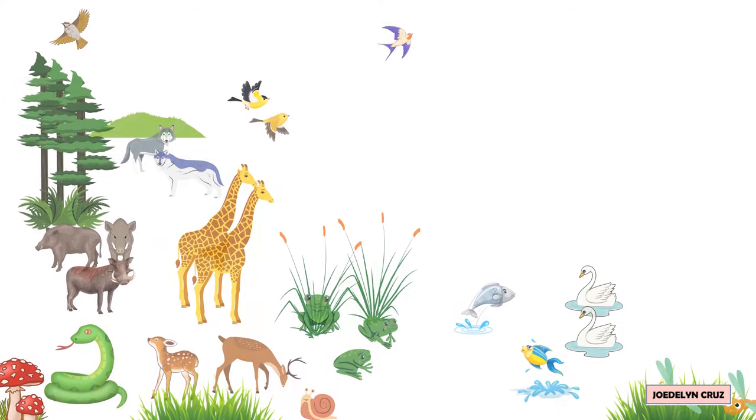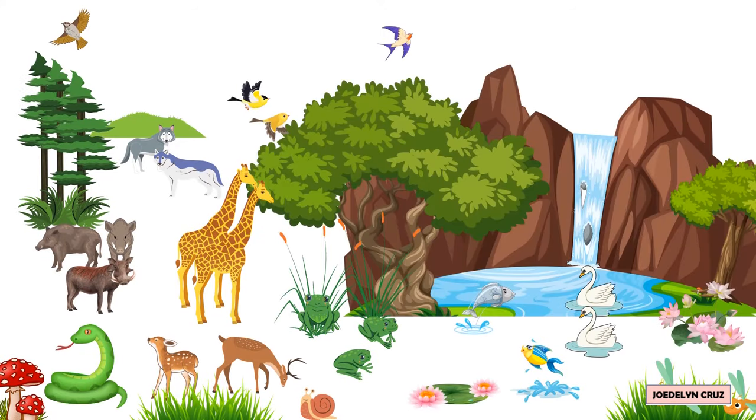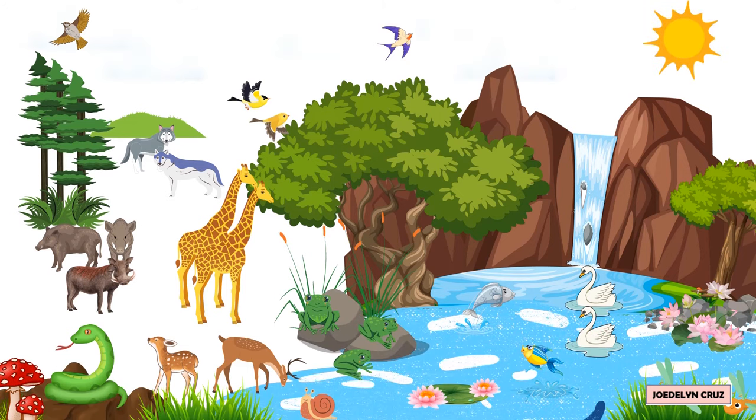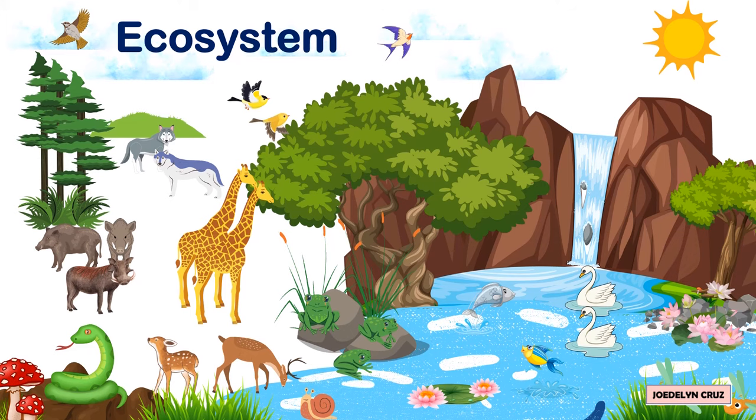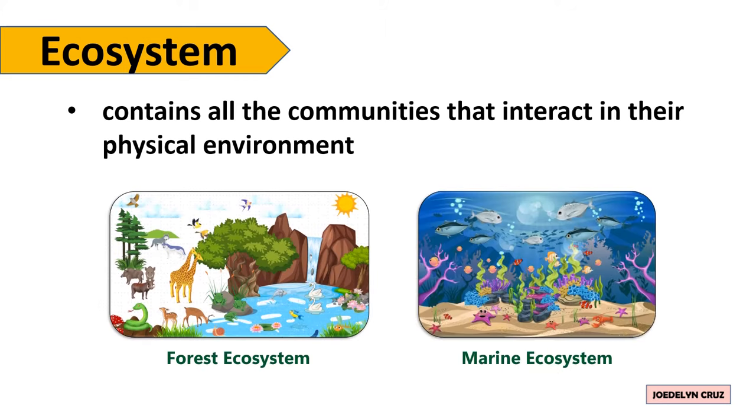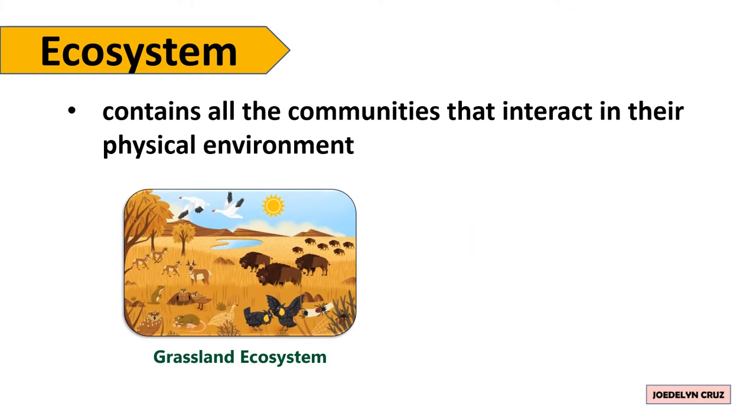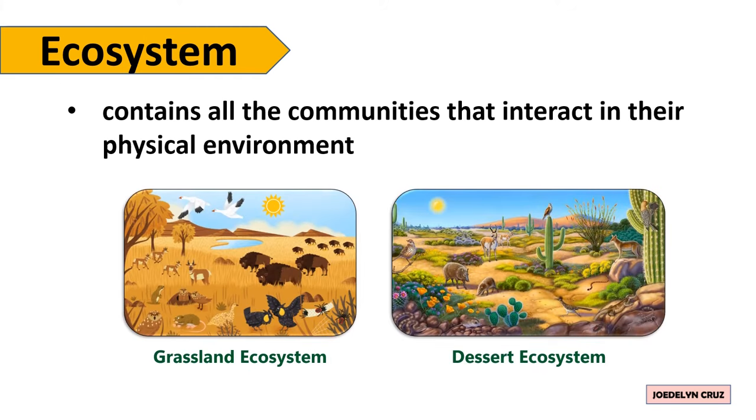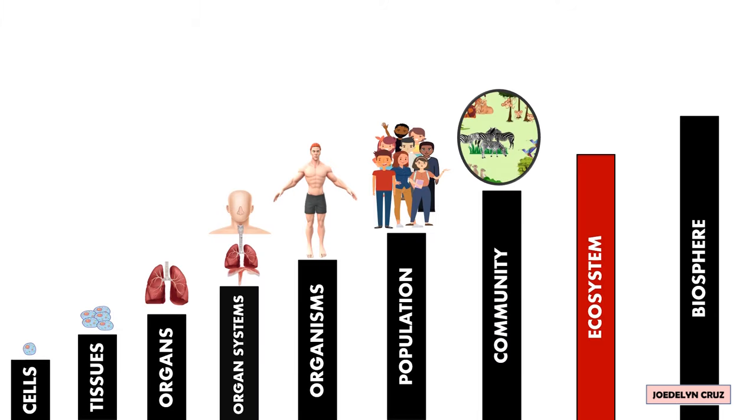When all communities interact with their physical environment or non-living things such as sunlight, soil, water, and temperature, an ecosystem is formed. Ecosystem contains all the communities that interact in their physical environment. The examples of ecosystems are Forest ecosystem, Marine ecosystem, Grassland ecosystem, and Desert ecosystem. Thus, one step above community is an ecosystem.